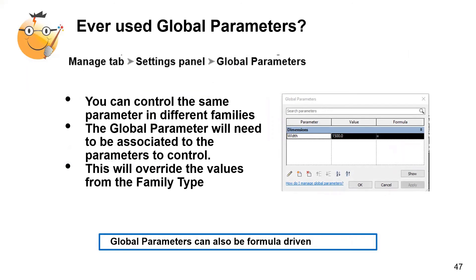Global parameters are like a spider sitting up high, controlling multiple things with its legs. I can set up a width global parameter and use it to control the value of multiple doors, windows, or anything else — and they can be formula-driven too. My favorite use: set up a rotation value and use it to control the rotation of all north arrows in my view titles, since Revit has not yet figured out how to give us a smart north arrow that responds to true north.